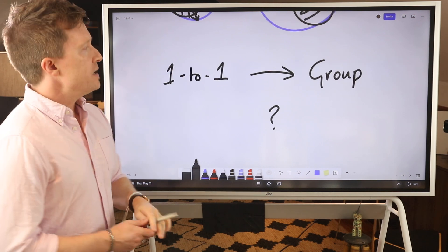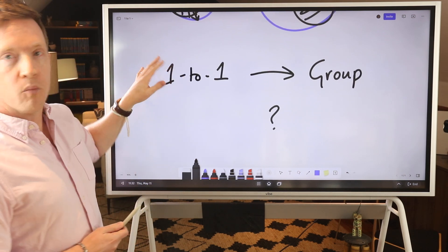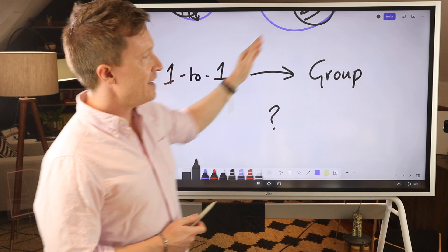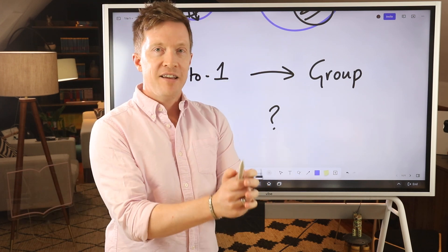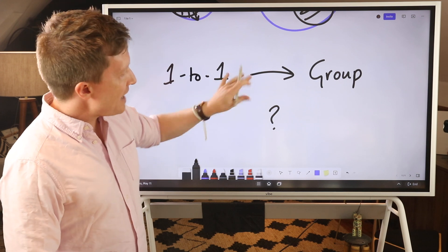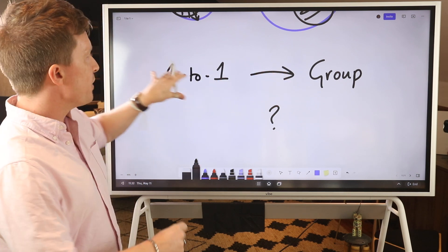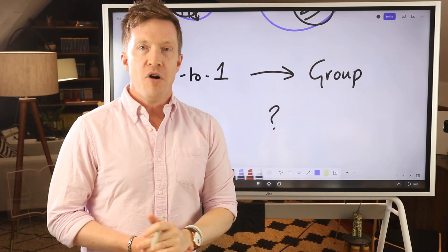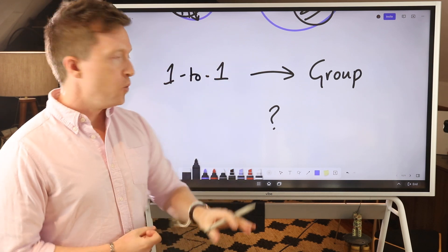So generally, what people do is they go straight from one-to-one directly into group, but as we've seen, you're constrained by the size of your audience. So what you need to do is add something else. It's an in-between step. It's not that going from one-to-one to group is wrong. It's that it's happening in the wrong order.